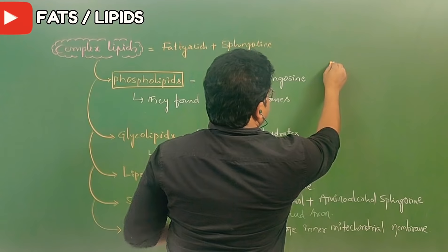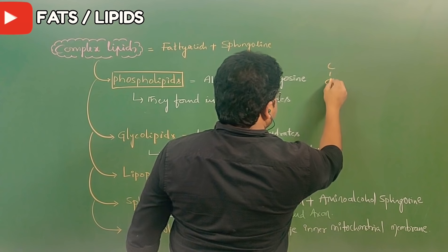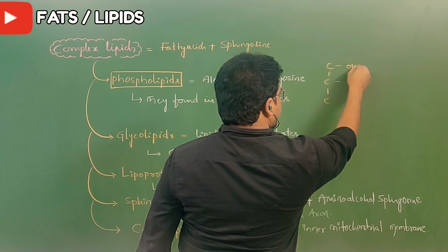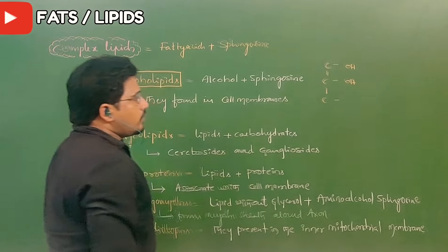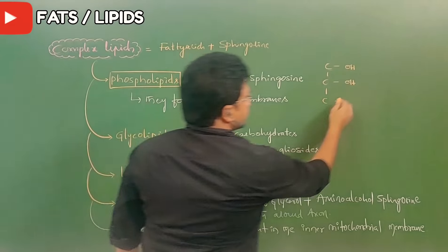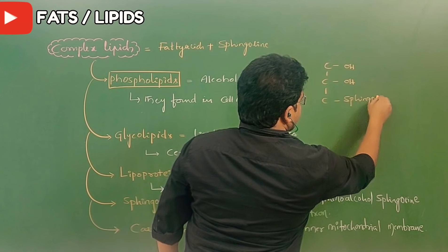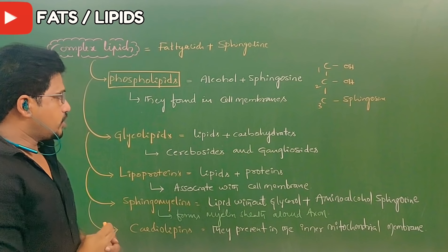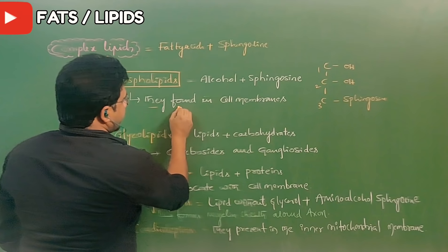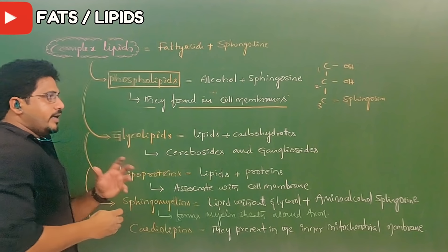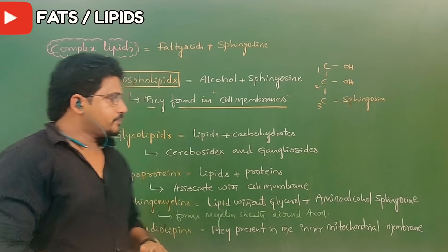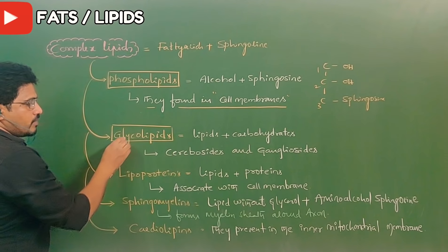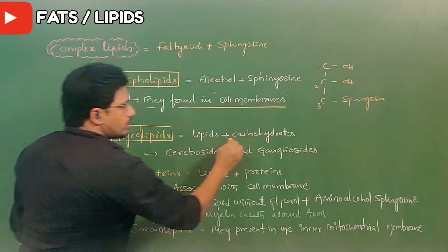In phospholipid, the first and second carbons are engaged with their respective hydroxyl groups, but the third carbon has sphingosine attached to it. So sphingosine is attached to the third carbon whereas the first and second carbons have their general hydroxyl groups. Phospholipids are found mainly in the cell membrane and help in transport.